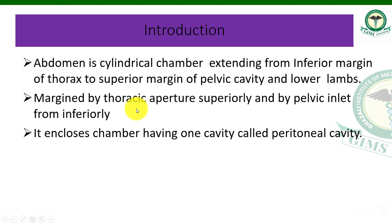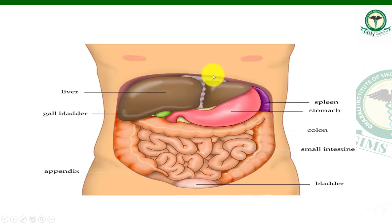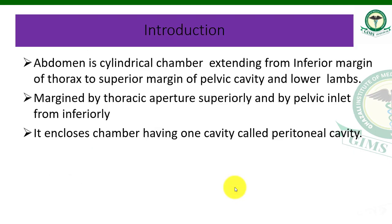The upper margin is called the thoracic aperture, superiorly, and from the bottom inferiorly it opens into the pelvic cavity. Within this chamber is one cavity called the peritoneal cavity.